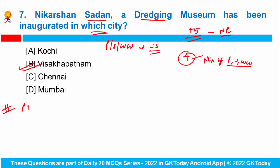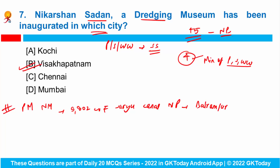Do remember that PM Narendra Modi is set to inaugurate the 9,802 crore rupees Saru Kainal National Project in Balrampur district, Uttar Pradesh. This project connects five rivers: Bhagra, Saru, Rakti, Benganda, and Rohin.